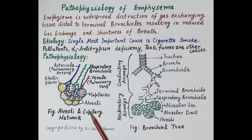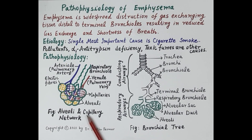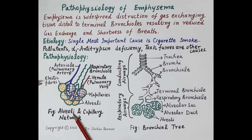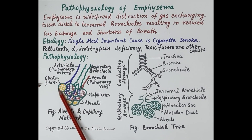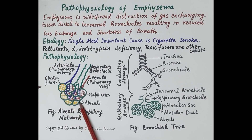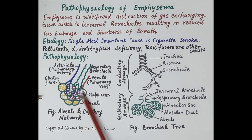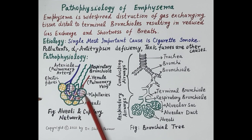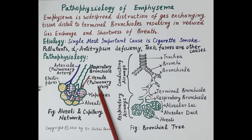This diagram shows alveoli, or the air sacs — shown here in green — and the capillary network surrounding them. These capillaries are the branches of pulmonary venules and pulmonary arterioles.